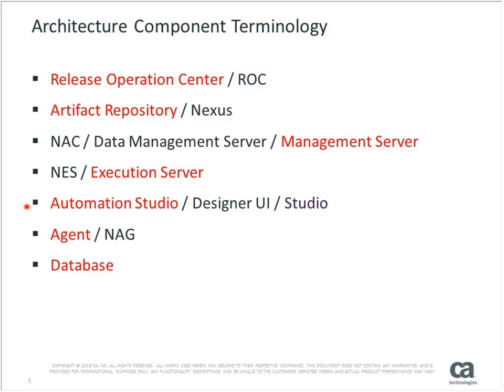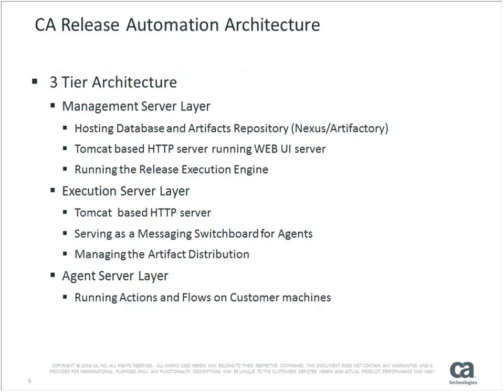We're going to start with a simple slide explaining the architecture of Release Automation. It's a three-tier architecture. We have the management server — the heart of the implementation — which has the release execution engine, where the UI attaches to, and connects to the database. Without the management server nothing really works. Below that we have the execution server, which is the messaging bus that switches from the management server to the agents. All traffic goes via the execution server. The third tier is the agents.